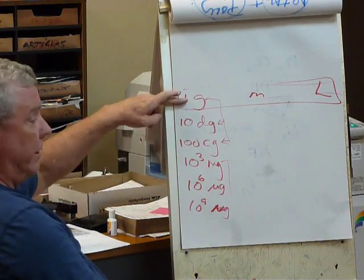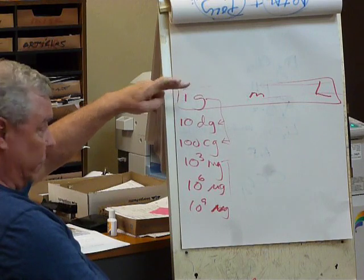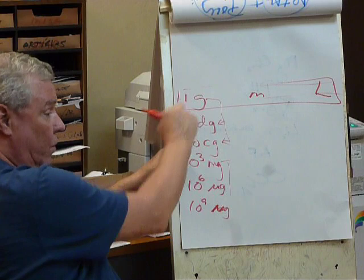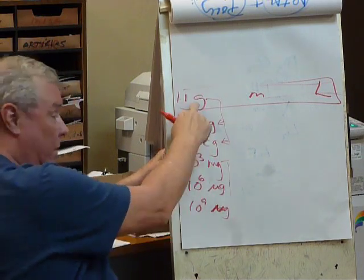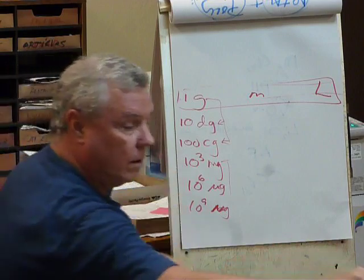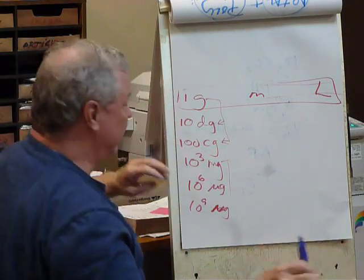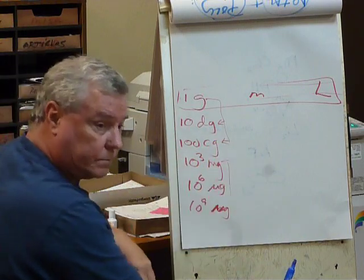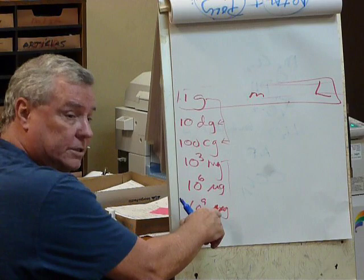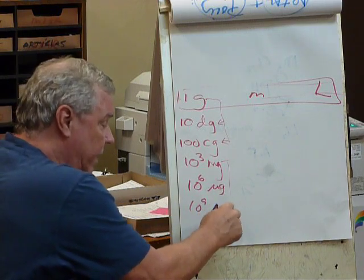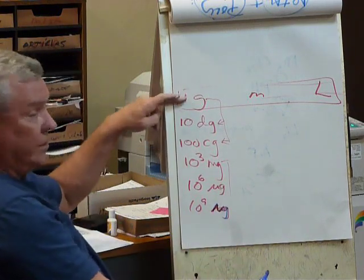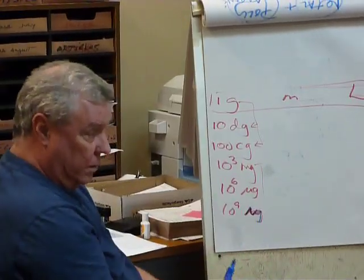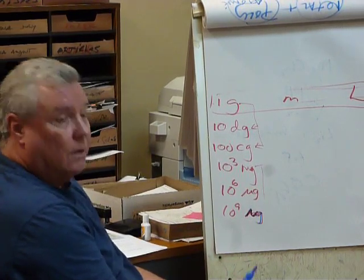So how many nanograms in a gram? Ten to the nine. How many micrograms in a gram? Ten to the six. How about milligrams? Ten to the three. Notice, the gram is bigger than all these guys. All these guys are smaller in terms of, I need ten of these to make one of those.